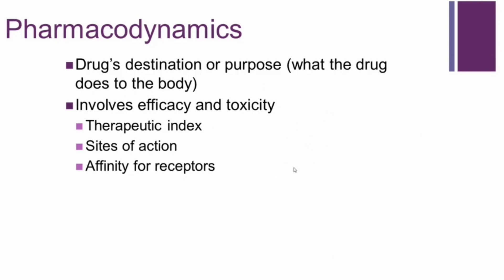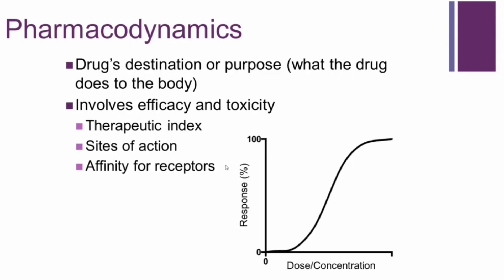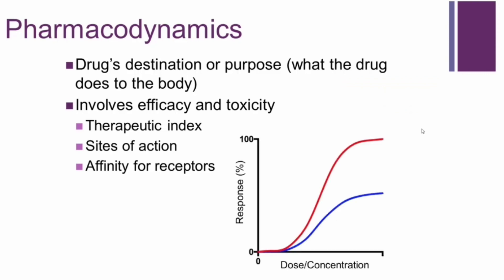Pharmacodynamics is the opposite — this is what the drug does to the body, related to the drug's destination or purpose. It involves efficacy and toxicity, and important terms include therapeutic index, sites of action, and affinity for receptors. When you give a dose or concentration of drug, the degree of response goes from zero up to 100%, yielding a sigmoidal curve. Once you reach a point where giving more drug yields no added effect, that's the maximum effect — you never want to dose above that because you get off-target effects or toxicity.